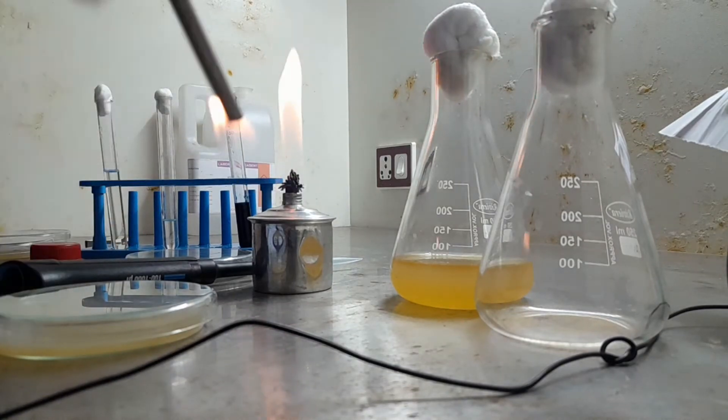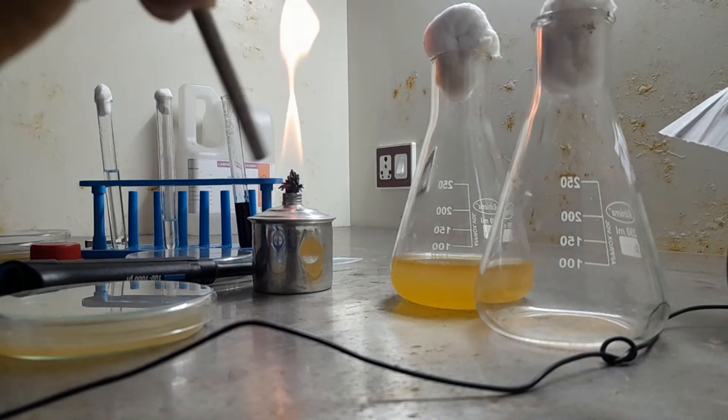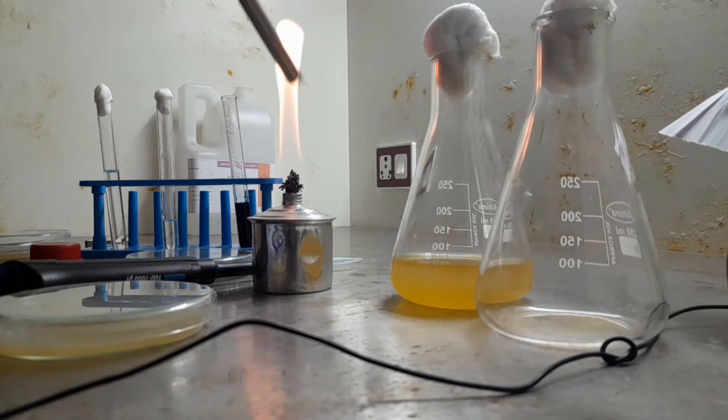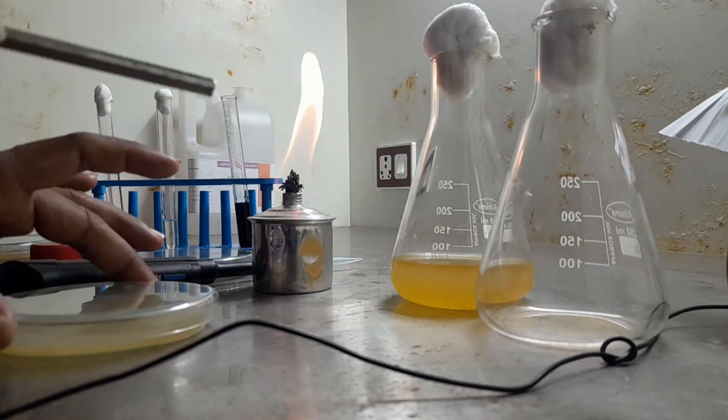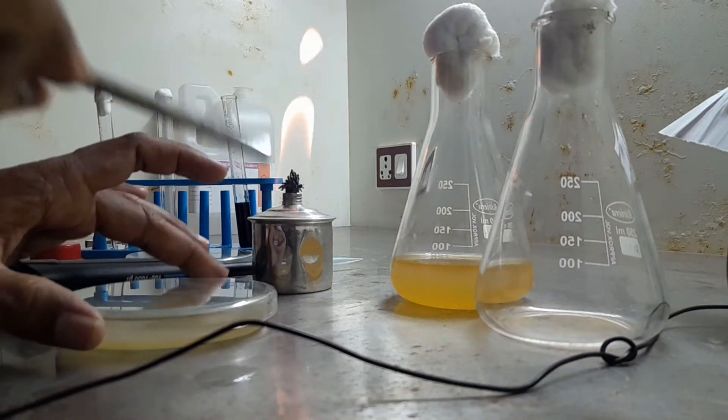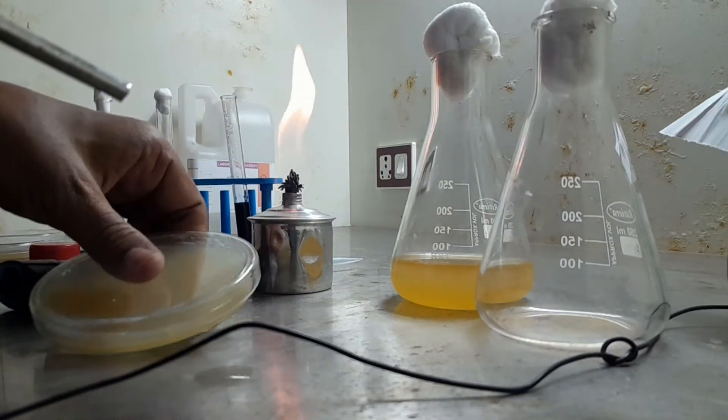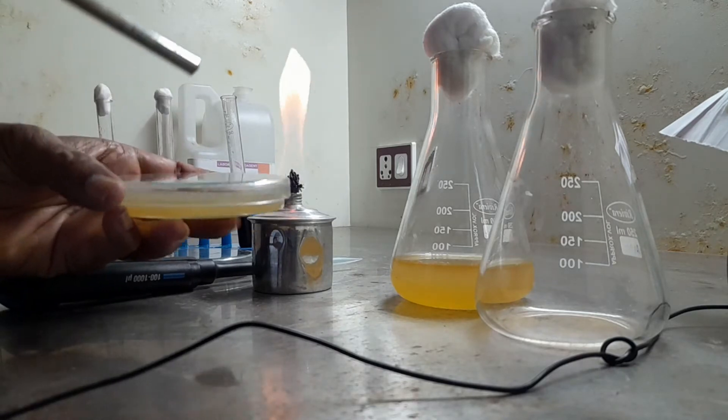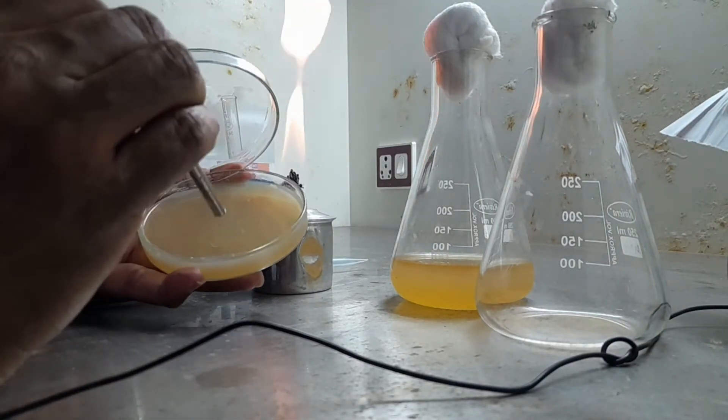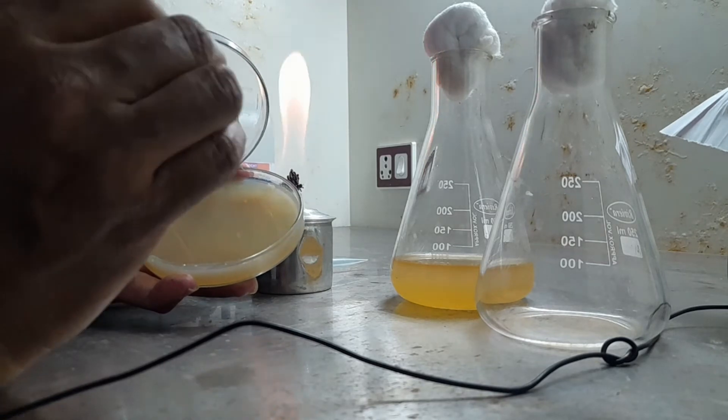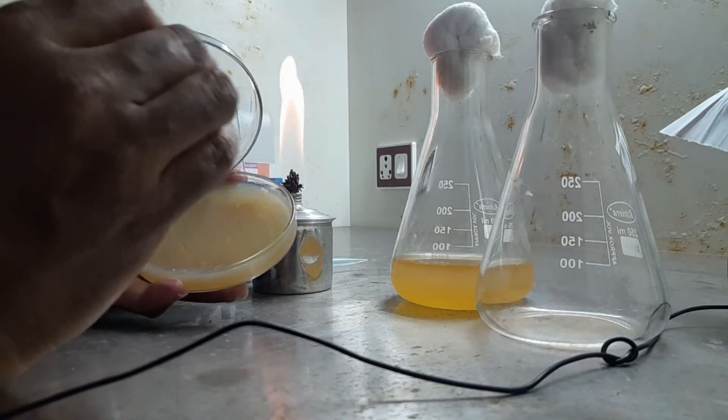Next, once you ensure there is no flame in the cork borer, what you do? Just how many wells you want, accordingly you prepare. You prepare 4 wells or 6 wells. This is how we prepare wells for well diffusion method.